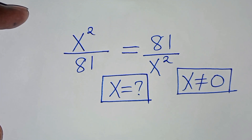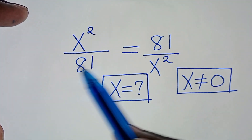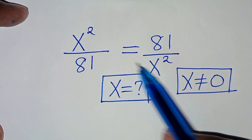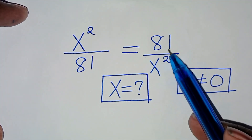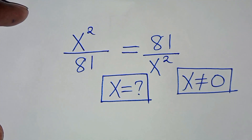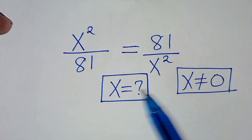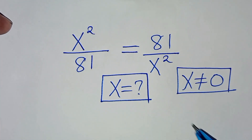Hello everyone, you are welcome to solve this nice algebra problem, which is x squared divided by 81. This is equal to 81 over x squared. So what is the value of x, given that x is not equal to 0?